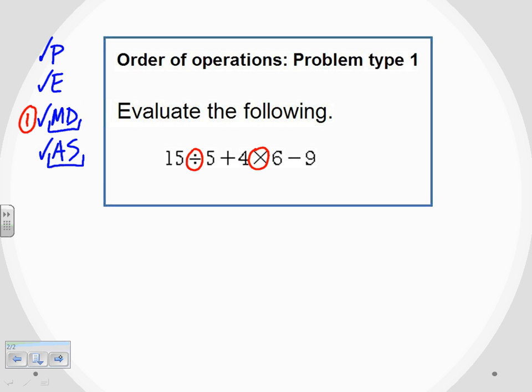So they need to get done from left to right. I'm not going to do the multiplication first and then come back and do the division. I'm going to go left to right. So in my first step, I'm actually going to start off with division because it's the one on the left-hand side. So I'm just going to bring that down. 15 divided by 5, that would give me 3. And now I'm just going to bring down everything else, plus 4 times 6, minus 9, because I've done one step. I like to do one step at a time.